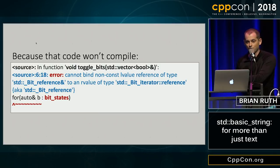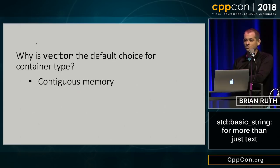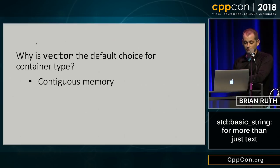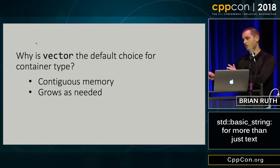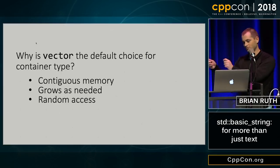Vector<bool> aside, why do we choose vector? Why is that the default container type? First of all, it's contiguous memory, so it's easy to allocate. You can iterate through it easily and pass it to C functions. It also grows as needed, so if you don't need much memory you can keep it short, and if you need more you can make it longer. And you get random access, so it plays well with C by having pointers to different parts.